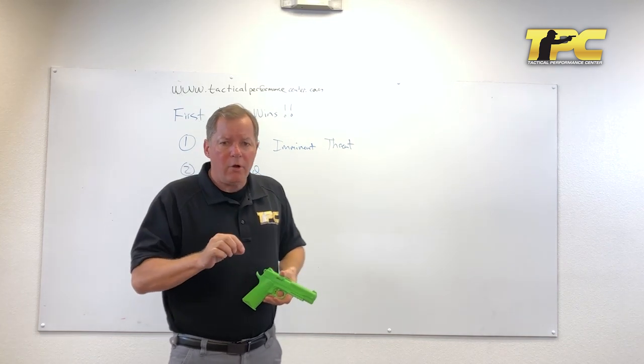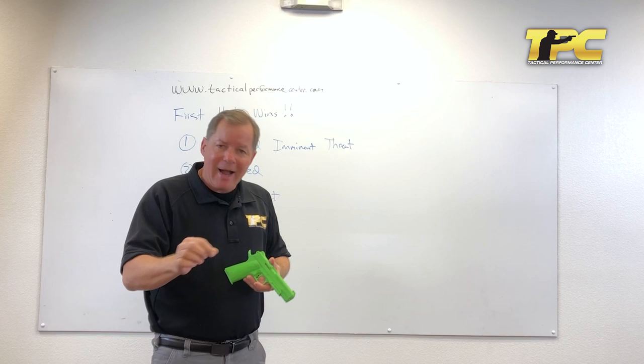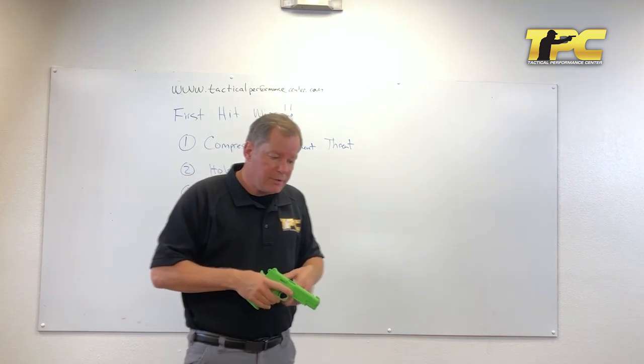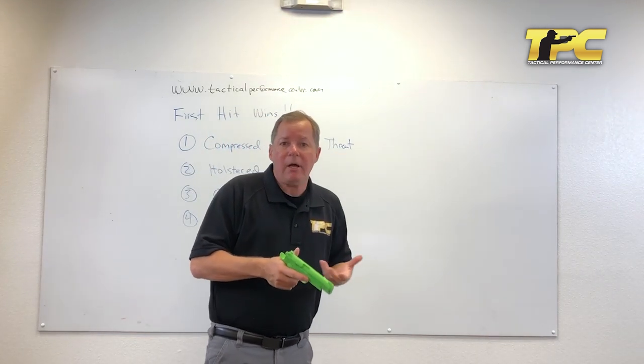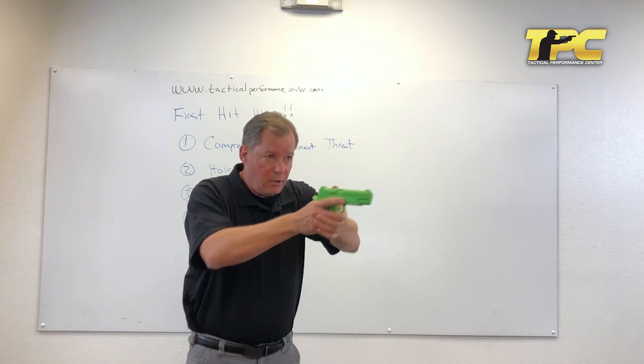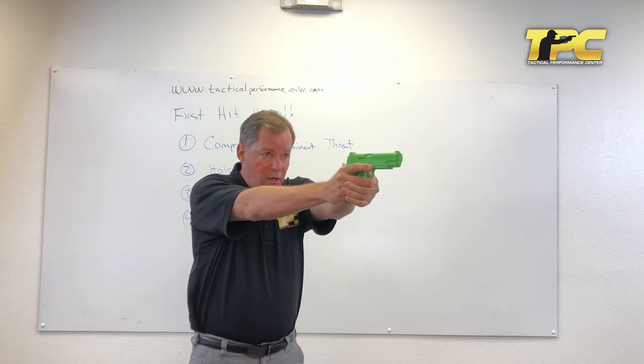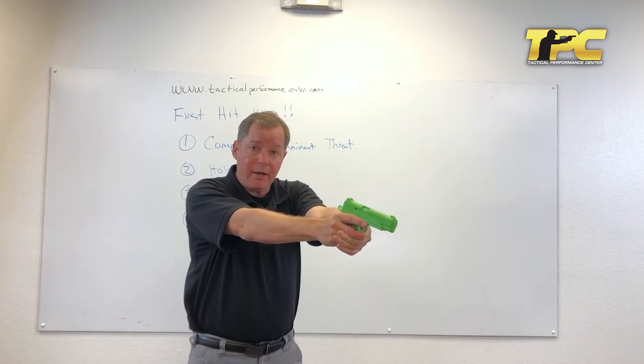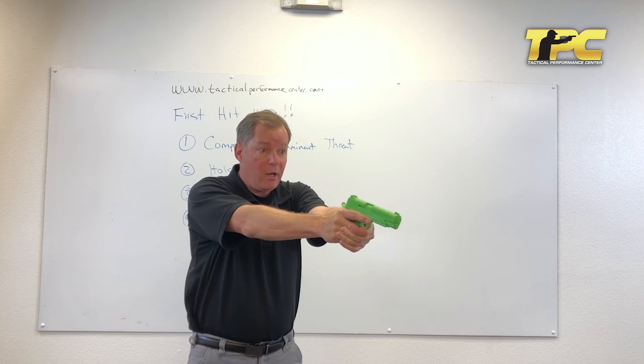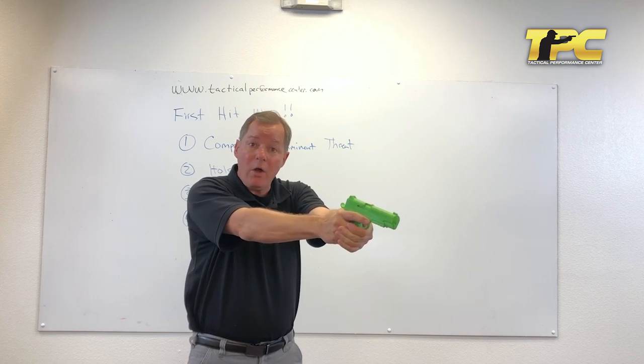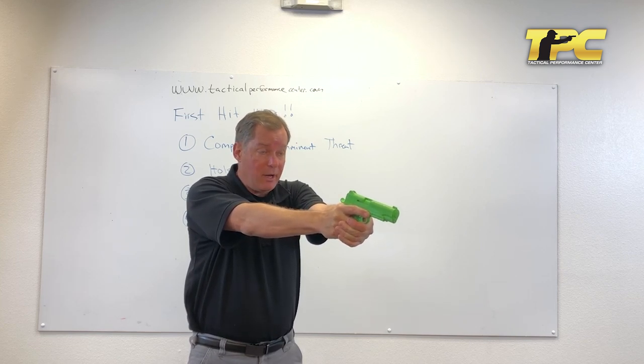You'll note though in our start positions we like to talk about sort of a tactical or scenario type situation. So the way we like to think about low ready is on target, but I can lower the gun and I can see their hands. So we've got a threat, the gun is lowered so the gun is not on them, but I can see their hands.